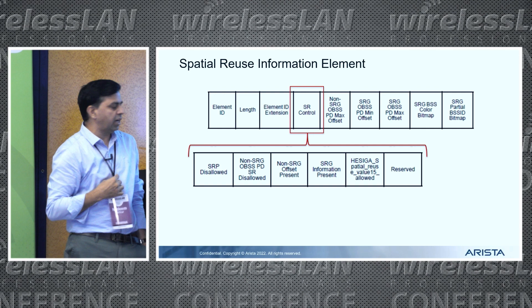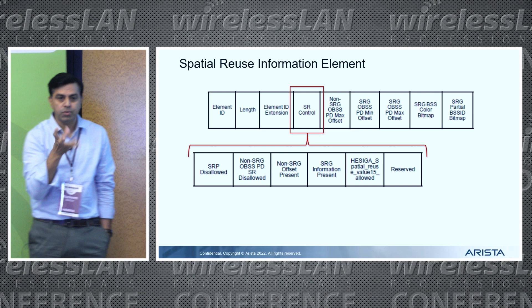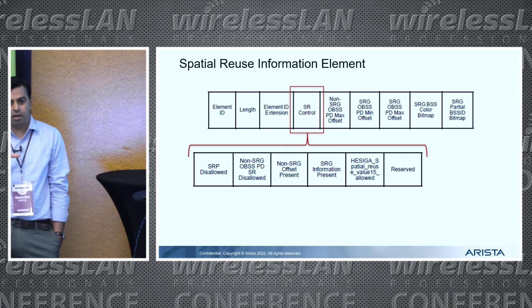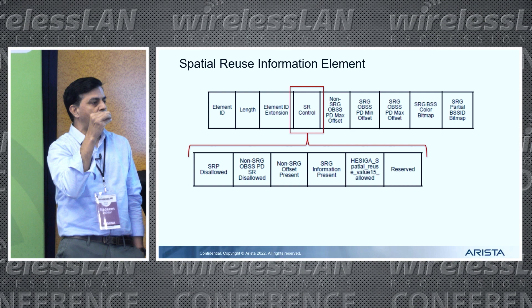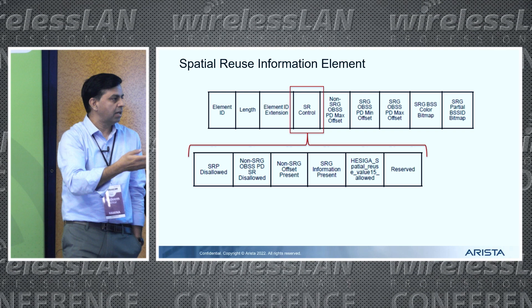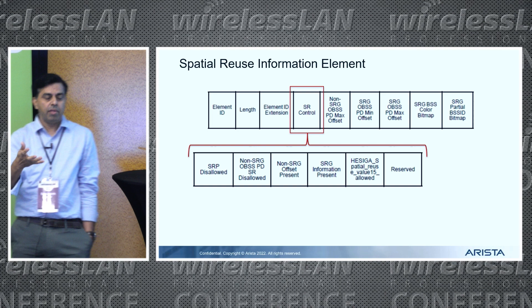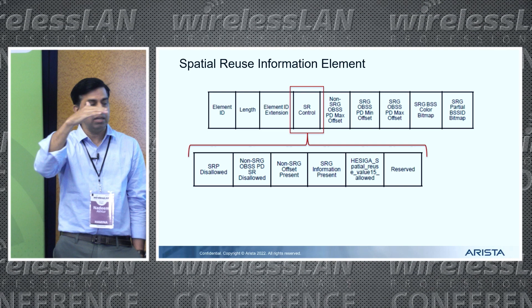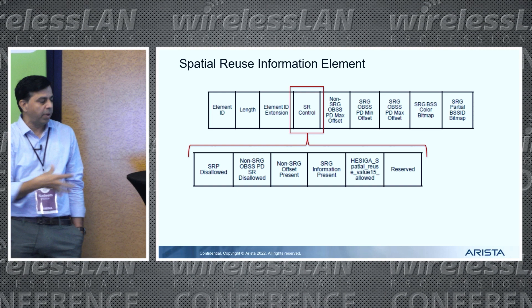This signaling is communicated via a new information element defined in the spec, which includes knobs to turn on or off certain flavors of spatial reuse and the corresponding parameters. For example, the AP can announce that none of the stations are allowed to use spatial reuse by setting a flag. If spatial reuse is allowed, the AP can communicate a specific upper limit for the PD value — the minimum is minus 82, and the upper limit can be set to anything up to minus 62. All stations within the group must adhere to that.